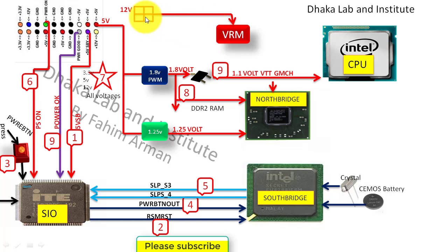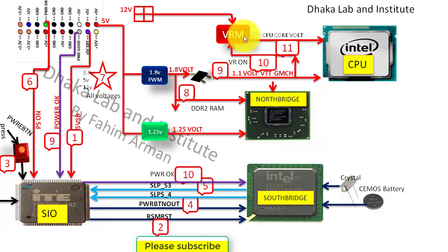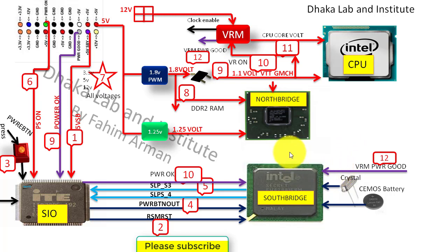The VRM section gets 12V, and there will be a VRM signal from IO and other parts. There will also be a power OK signal from IO to the South Bridge. Then the VRM section will provide the CPU core voltage. After having power and signal, the CPU core voltage enters the CPU. When the CPU gets power, it provides VRM power good, and that VRM power good signal also enters the South Bridge.